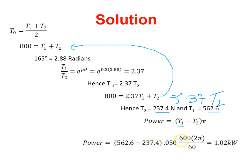Omega was 600 revs per minute. To bring that to revolutions per second, divide by 60, then multiply by 2π to bring it to radians. The diameter was 100 millimeters, so the radius is 50 millimeters. When I multiply that all out, Power equals (562.6 minus 237.4) times 0.050 times (600/60) times 2π, which equals 1.02 kilowatts.